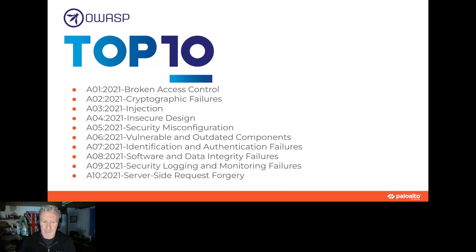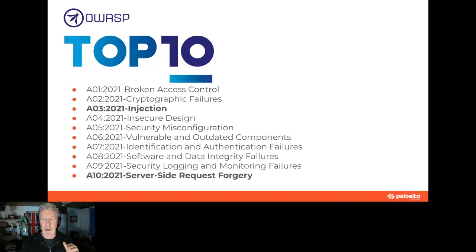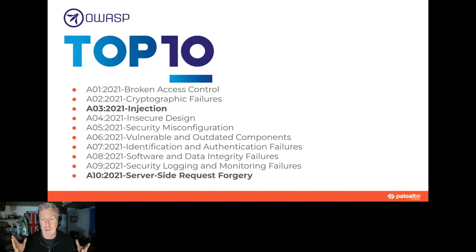OWASP Top 10 — it's been around a while. Security people love to talk about it. But there have been some very important changes in the version released last year which recognized this move to cloud-native. Some of the old dog-eared elements like injection and server-side request forgery — things associated with application security — are getting less important, moving down the list.